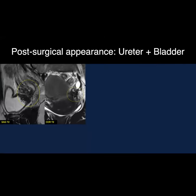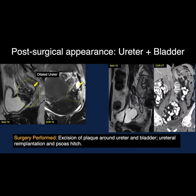Here a patient has urinary tract involvement by deep endometriosis. There are T2 hypointense plaques infiltrating the ureter and adjacent bladder wall, giving rise to hydroureter on the same side. Surgery involved excising these plaques involving the ureter and bladder wall. Because the plaques were extensive, the ureter had to be re-implanted with creation of a psoas hitch. On post-surgical imaging, you see distortion of the bladder contour and the shortened ureter now re-implanted at another site on the bladder wall.